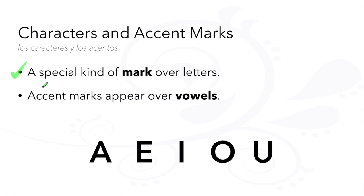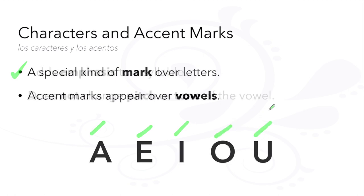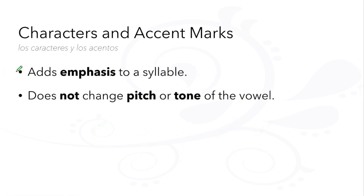Accent marks are a special kind of mark that appears over letters, like vowels a, e, i, o, and u. Accent marks add emphasis to a specific syllable and they do not change the pitch or tone of a vowel, like they do in other languages.